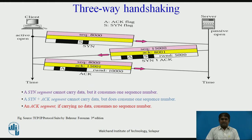Second, the server sends the second segment — a SYN plus ACK segment — with two flag bits set: SYN and ACK. This segment has a dual purpose. First, it is a SYN segment for communication in the other direction. The server uses this segment to initialize a sequence number for numbering the bytes sent from the server to the client. The server also acknowledges the receipt of the SYN segment from the client by setting the ACK flag and displaying the next sequence number.